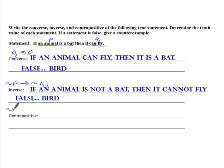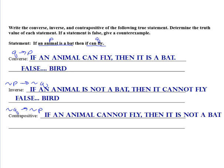And then our contrapositive, that is when we switch and negate. And what that looks like is an animal cannot fly, then it is not a bat. So if an animal cannot fly, can we say that it's a bat? That is true. Now again, bat meaning the animal bat.